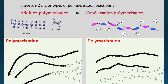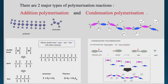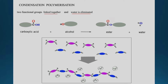In addition polymerization, the double bond opens up and links to form a chain of individual monomers into a polymer. Now, focusing on condensation polymerization and its difference: in each molecule, there will be two functional groups — this functional group and this functional group — and these two functional groups will link up and bond together.